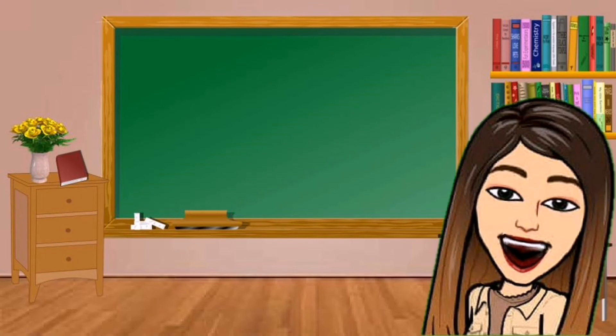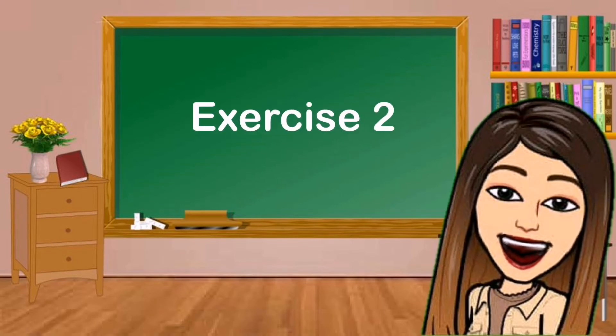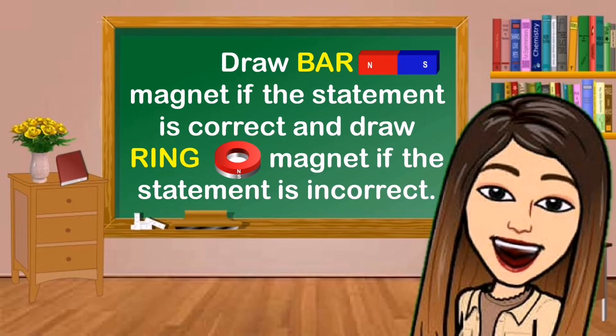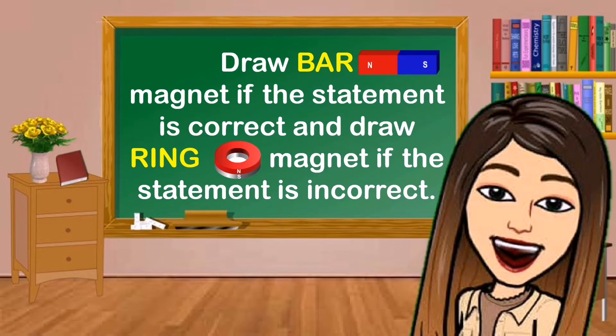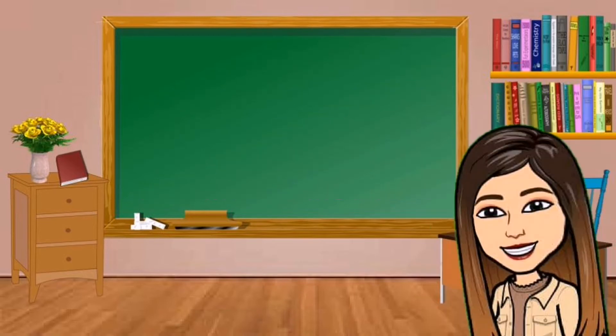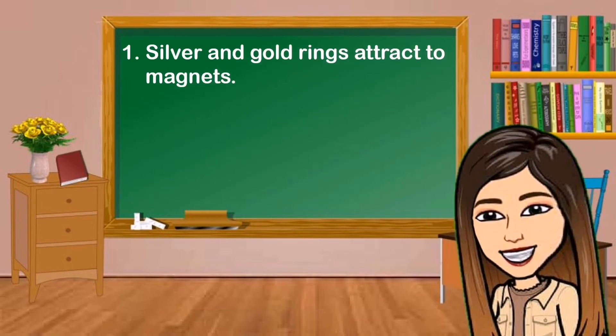Now let's have exercise 2. Draw a bar magnet if the statement is correct and draw a ring magnet if the statement is incorrect.